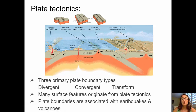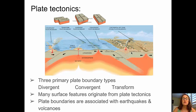At convergent boundaries, where plates are moving toward one another, the oceanic crust created at the divergent boundary is subducted underneath the continental crust where the oceanic and continental plates meet. This causes volcanic activity and earthquakes. At transform plate boundaries, such as the San Andreas Fault, plates slide past each other. There is no vertical component here, so we have a lot of earthquakes but no volcanic activity.